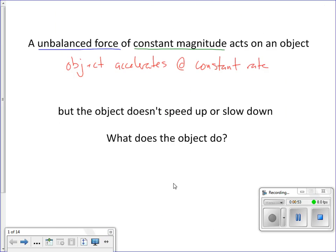The object doesn't, however, speed up or slow down, and this is possible. I know what you're thinking, right? Acceleration means speed up or slow down, but it doesn't have to. An object can accelerate at a constant rate, even if it doesn't speed up or slow down. So, pause for a minute again. Think about what this must mean. Go ahead and pause.